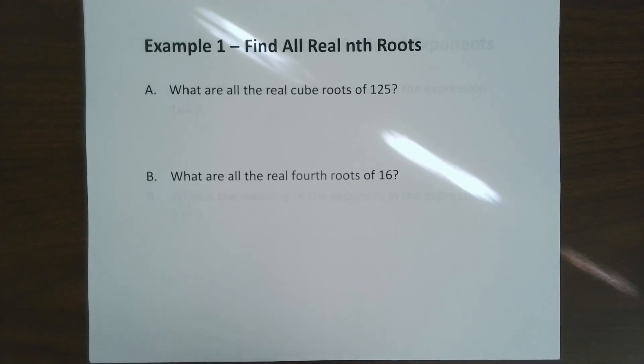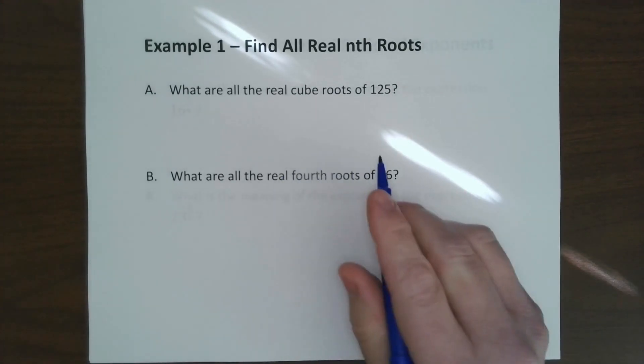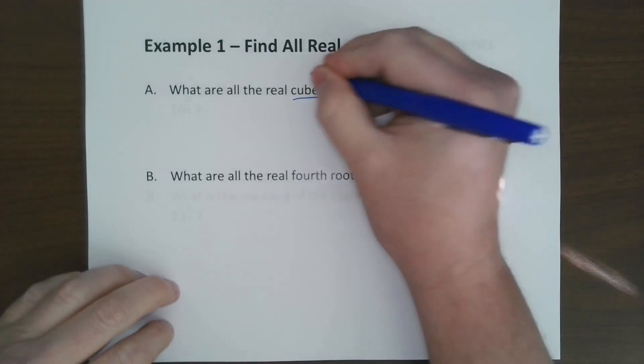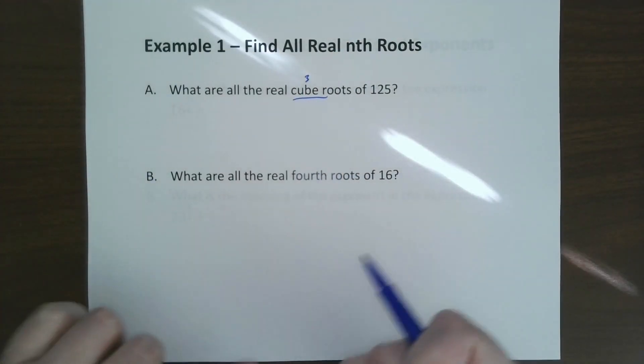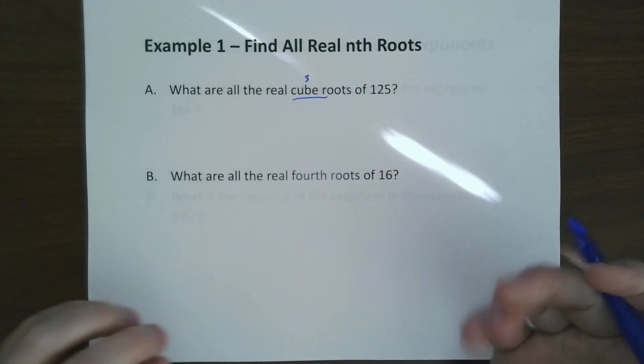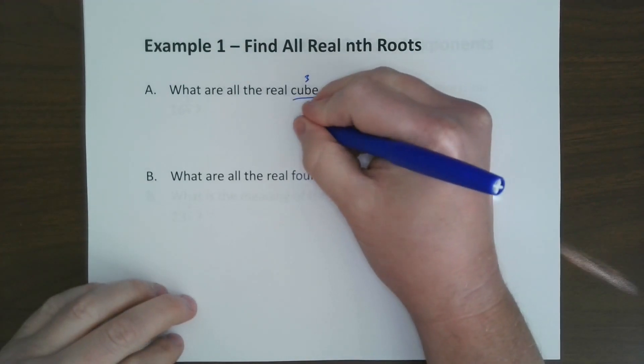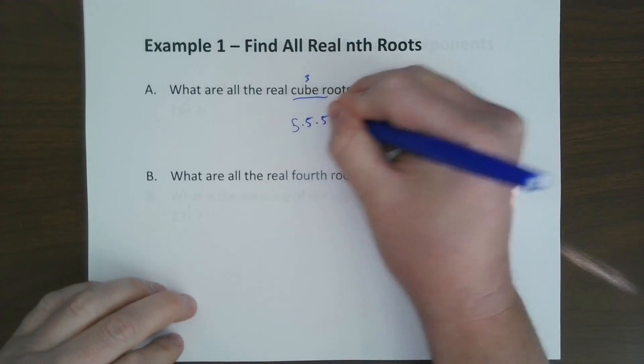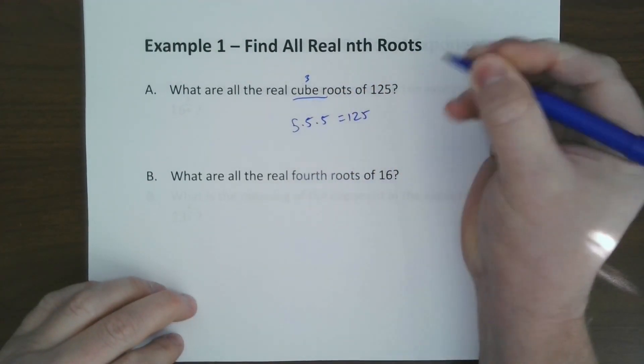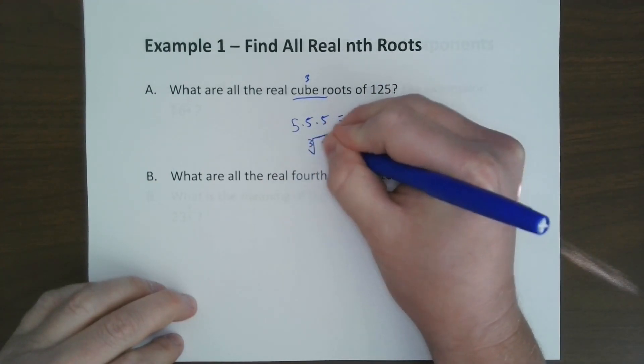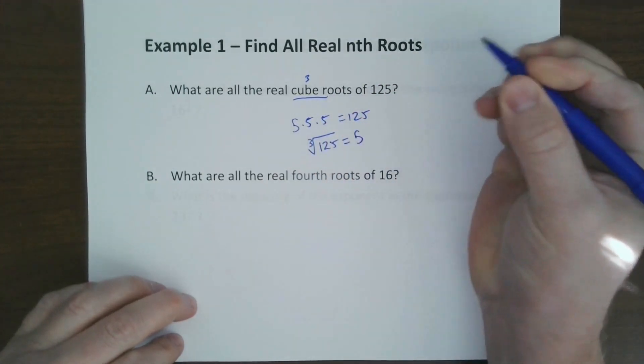First thing we're going to do is find all the nth roots. What are the real cube roots? Cube root means 3. In other words, what times itself 3 times is 125? We notice that 5 times 5 times 5 is 125, so the cube root of 125 is 5.